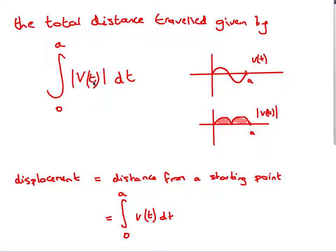Two other useful things: total distance travelled is the integral of the absolute value (modulus) of velocity. The absolute of the graph turns any negative parts positive, so you count the total area. Also, in IB's definition, displacement means distance from a given starting point — so displacement at time A is the integral from zero to A of the velocity.